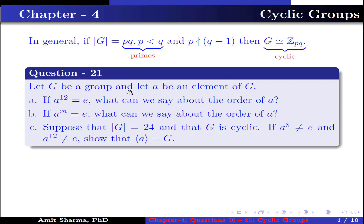Let G be a group and let A be any element of G. If A to the power 12 is equal to identity, what can we say about the order of A? If A to the power M equals identity, what can we say about the order of A? Part C: suppose the order of G is 24 and G is cyclic; if A to the power 8 is not equal to identity and A to the power 12 is not equal to identity, show that G is generated by A.